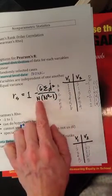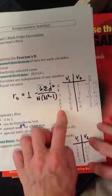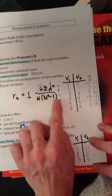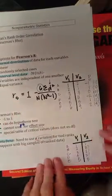And then obviously in the denominator you have the sample size, which is the number of cases or number of paired values you have. Multiply that times N-squared minus one, subtract this whole thing from the number one, and you have your Spearman's Rho.